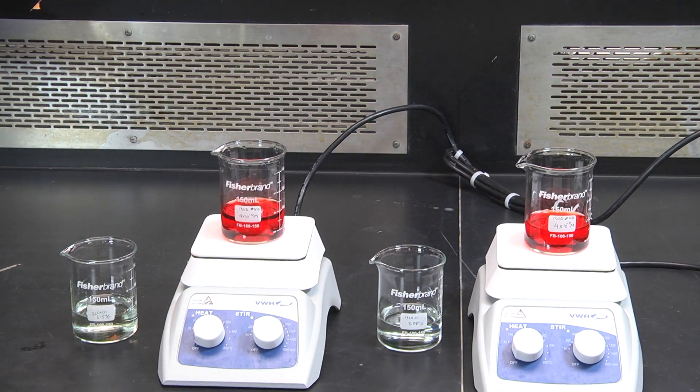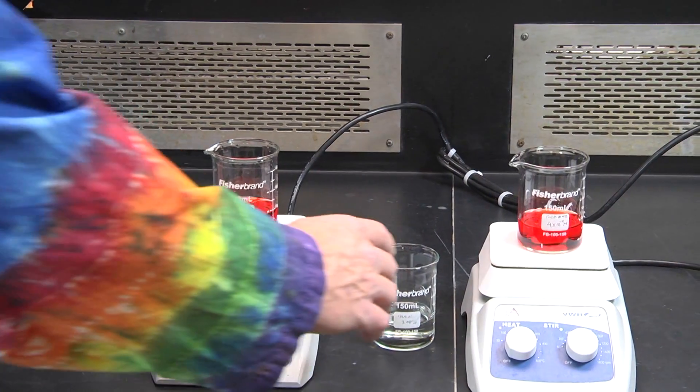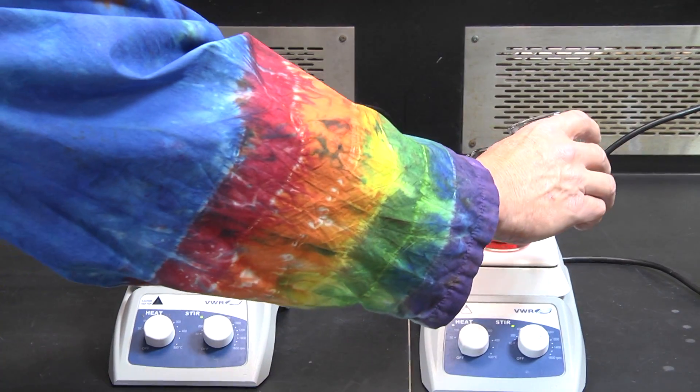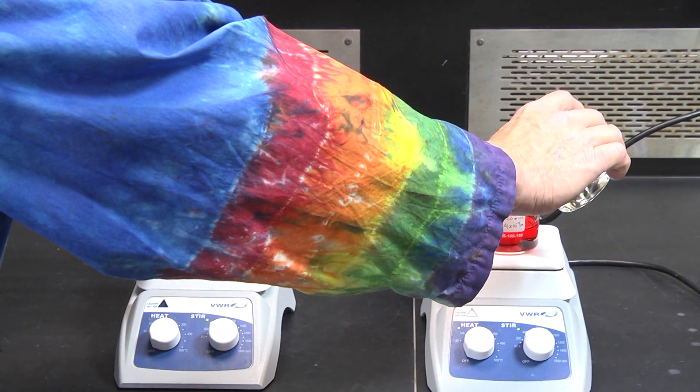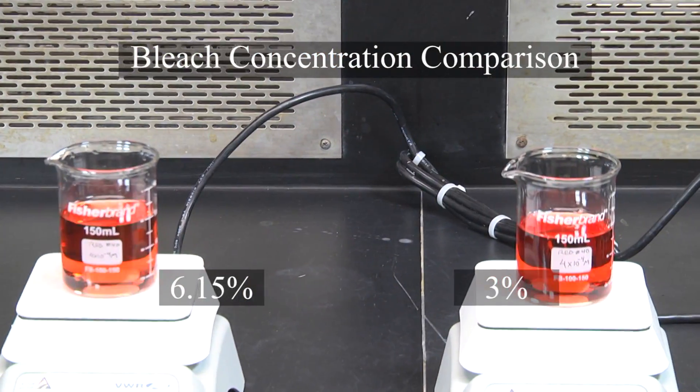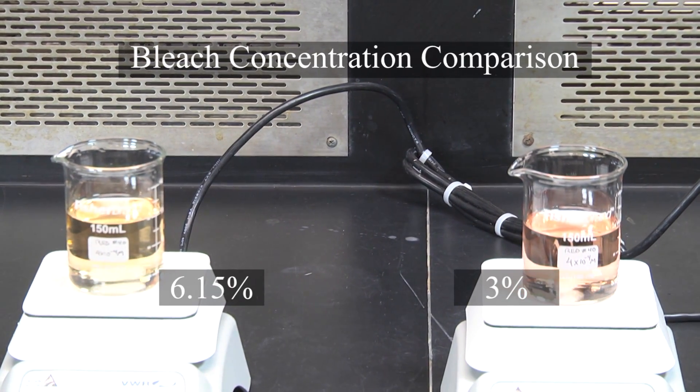Let's see what happens if we perform the reaction with the same dye concentration but with different bleach concentrations. In which beaker is the reaction going faster? Is this what you expect to see?